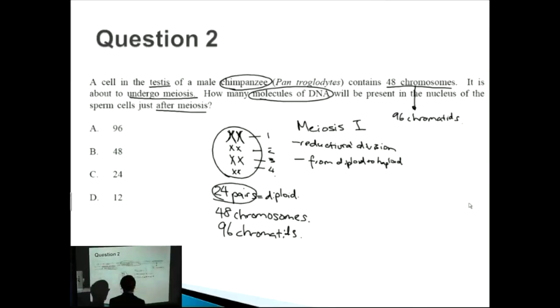So how many chromosomes will there be? It's going to go from diploid to haploid, which means that there will be now 24 chromosomes. 24 chromosomes, how many chromatids? Double that as well, so there will be 48 chromatids.